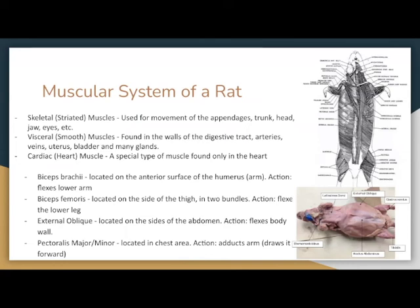The muscular system of a rat. Skeletal muscles are used for movement of the appendages, trunk, head, jaw, and eyes. Visceral smooth muscles are found in the walls of the digestive tract, arteries, veins, uterus, bladder, and many glands. Cardiac muscle is a special type found only in the heart. The bicep is located on the interior surface of the humerus and its action is to flex the lower arm. The biceps femoris is located on the side of the thigh in two bundles and flexes the lower leg. The external oblique is located on the sides of the abdomen and flexes the body. The pectoralis major/minor is located in the chest area and adducts the arm, drawing it forward.